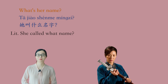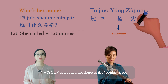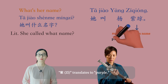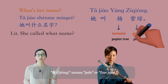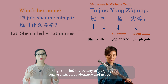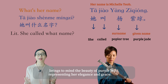她叫什么名字? What's her name? 她叫杨紫琼。 杨 is a surname that denotes the poplar tree. 紫 translates to purple. 琼 means jade or fine jade. Michelle Yeoh's Chinese name 杨紫琼 brings to mind the beauty of purple jade, representing her elegance and grace.